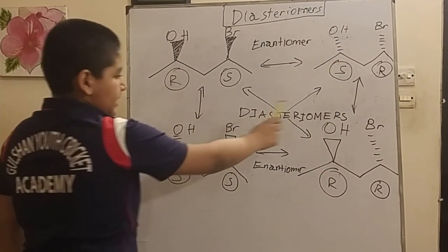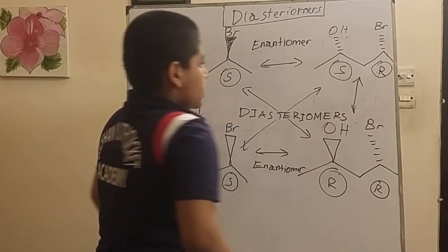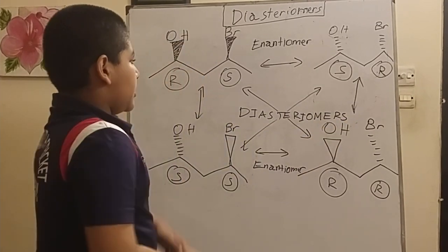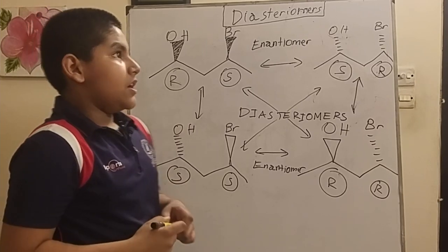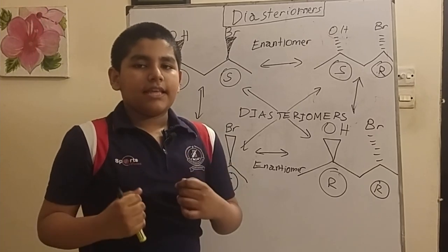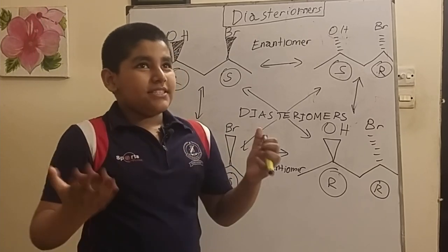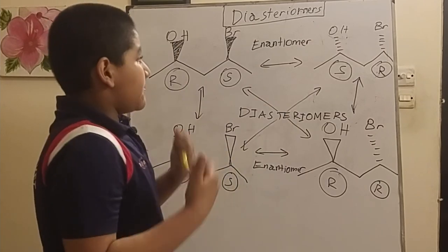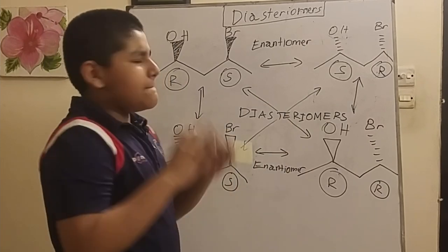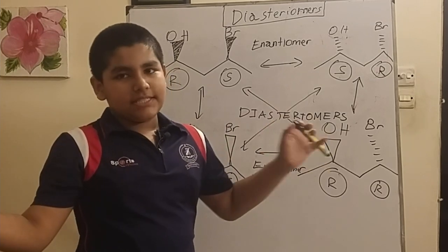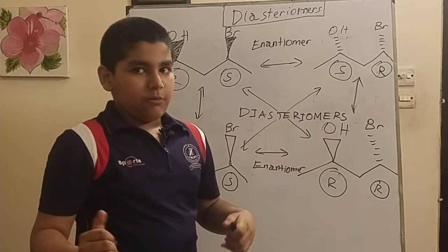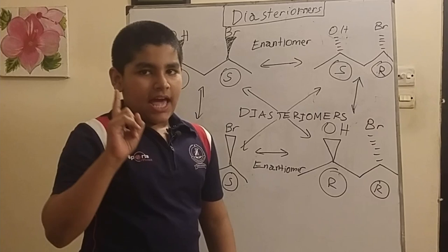So basically, what this means is that a molecule can have ten chiral centers, and that means they will have many, many different diastereomers, but they will only have one enantiomer because you can only have one mirror image.